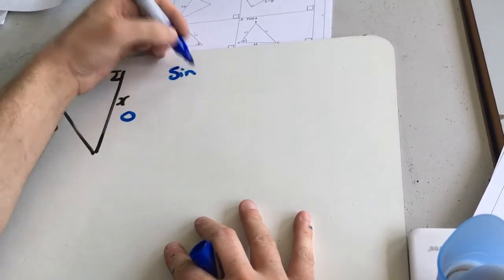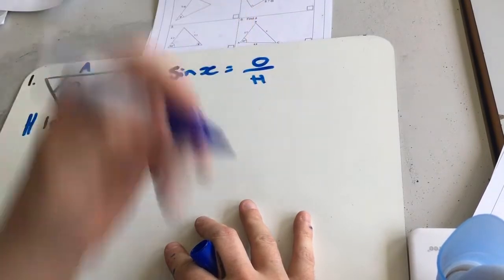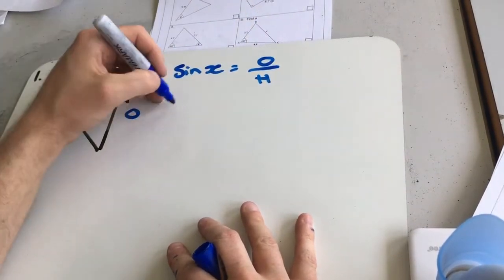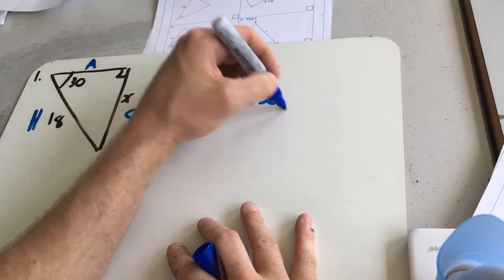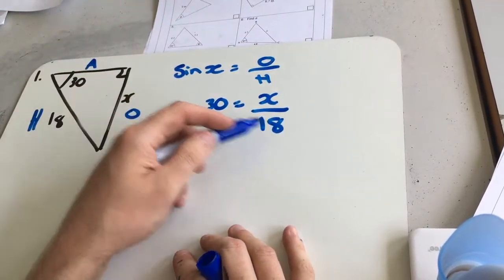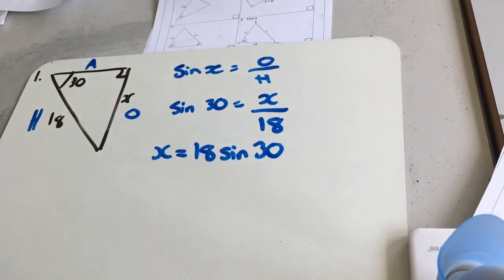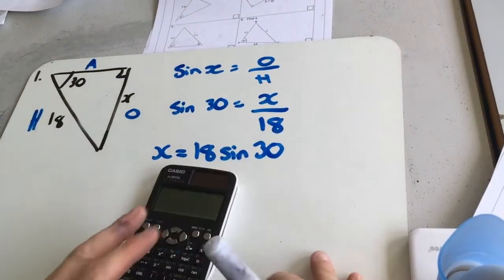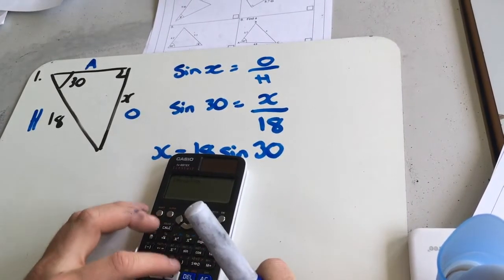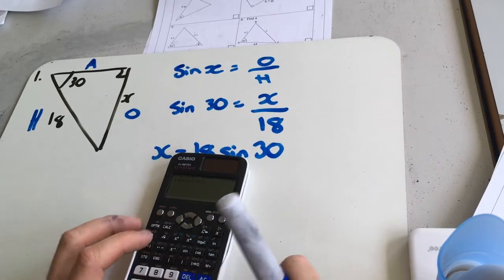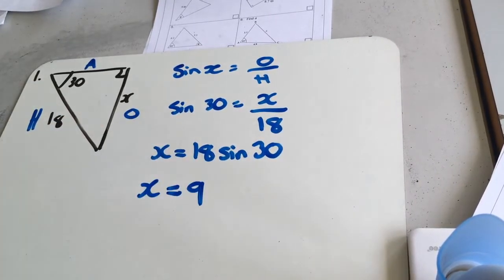And we know sine equals opposite over hypotenuse. So sine of 30 is going to be x, the thing I want, divided by 18. So I can times that by 18 and say x is 18 sine 30. Get my calculator. Which gives me a length of 9, so x equals 9 for that first one.